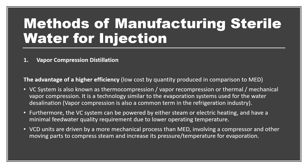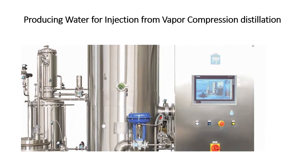The advantage of the vapor compression method is that it is used for commercial production, can produce thousands of liters at high speed, and has higher efficiency and lower cost compared to other methods. It is also referred to as thermal compression, vapor compression, thermal vapor compression, or mechanical vapor compression. The technology is similar to evaporation systems used for water desalination. The vapor compression system can be powered by either steam or electrical heating and has minimal feed water quality requirements.